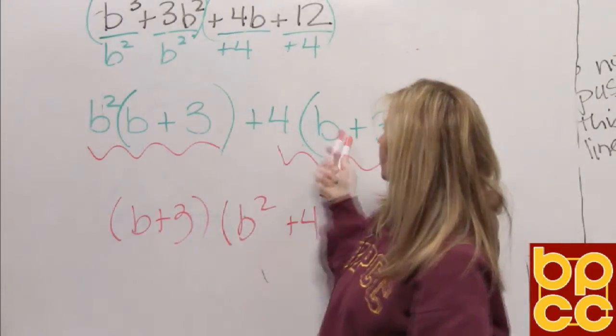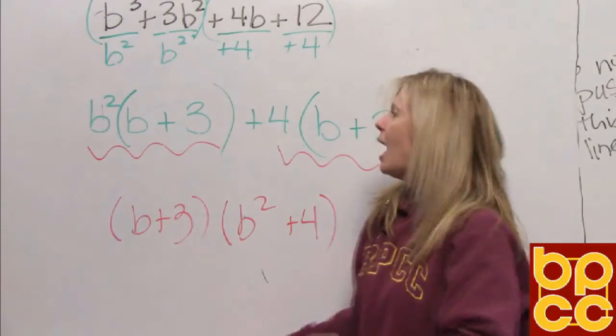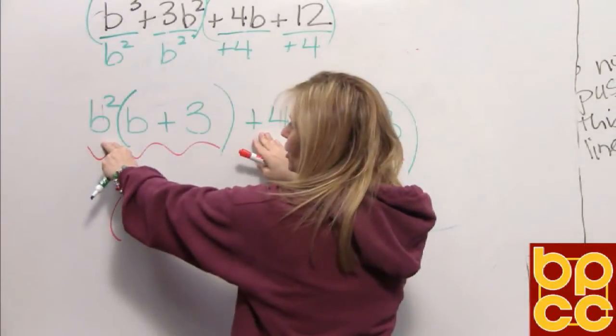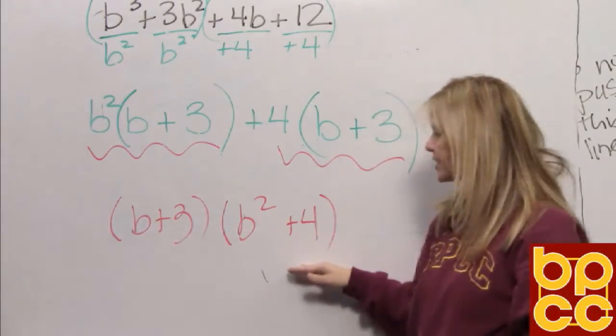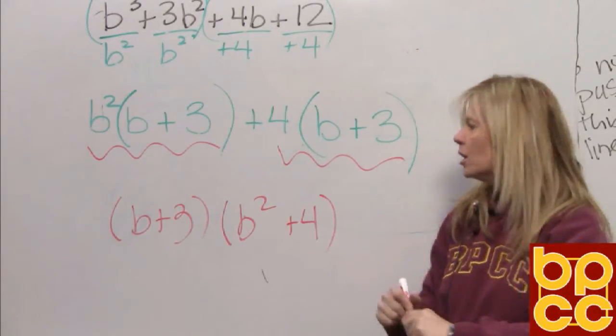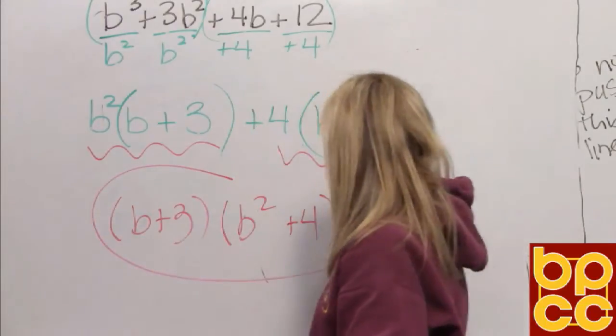You're going to take these parentheses that look the same and write them once, and then what's on the outside, the GCFs, you're writing its own parentheses. Now, this is connected by multiplication. So this is the final answer, factored.